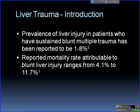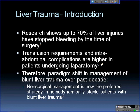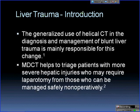The mortality rate is not insignificant — most quotes were around 4.1 to 11 percent. Research over the past decade shows that most liver injuries have stopped bleeding by the time of surgery, upwards of 70 percent. Transfusion requirements and intra-abdominal complications are higher in liver patients who undergo laparotomy. So there's been a paradigm shift from the mid-90s onward to manage these patients non-operatively, which is now the preferred strategy in hemodynamically stable patients. CT is mainly responsible for this change, helping triage patients with more severe injuries who may require laparotomy.